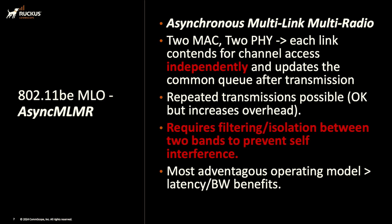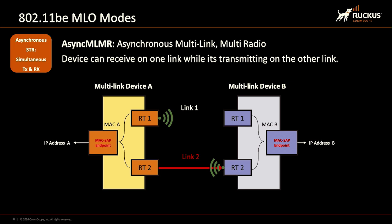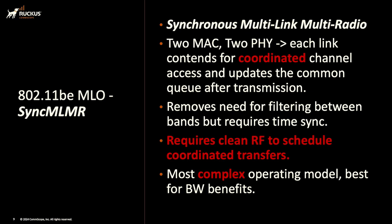So asynchronous multi-link multi-radio — there are two things I want to emphasize. Each radio contends for the channel access independently from each other. So even though there are two radios — 2.4, 5, or 6 GHz, however it's configured — they contend for the channel independently, which requires filtering and isolation between the two bands to keep them from interfering with each other. What it looks like in operation is it will send on one band and then come back on the other, and it can do that independently. That's why we need that isolation, which requires some extra hardware inside the client.